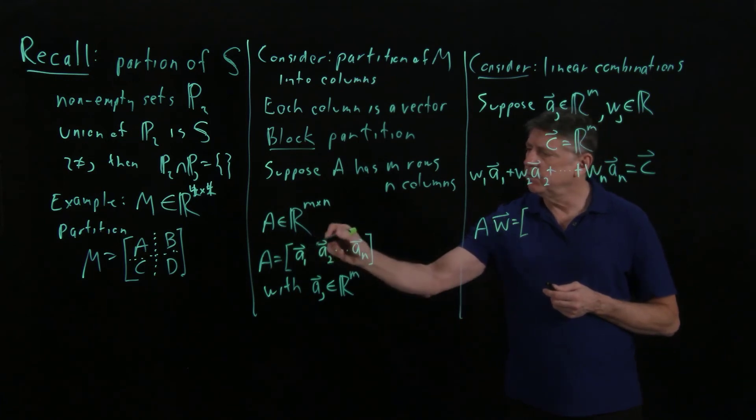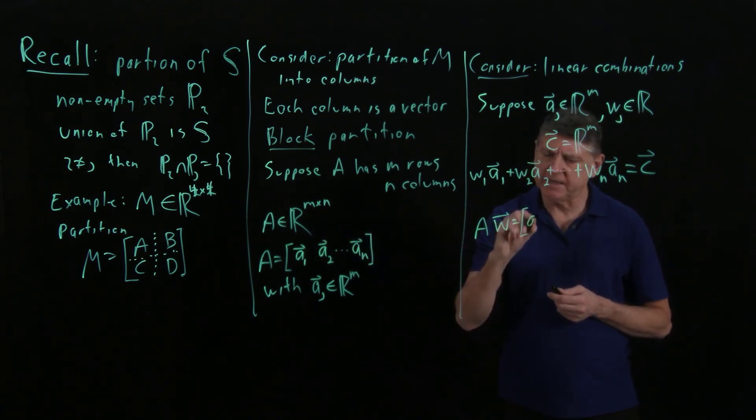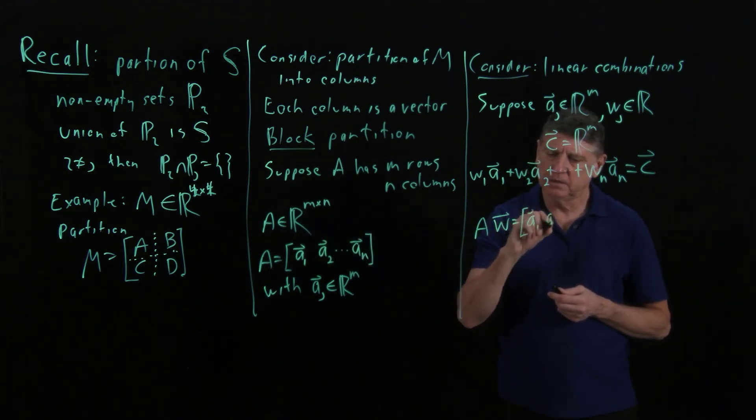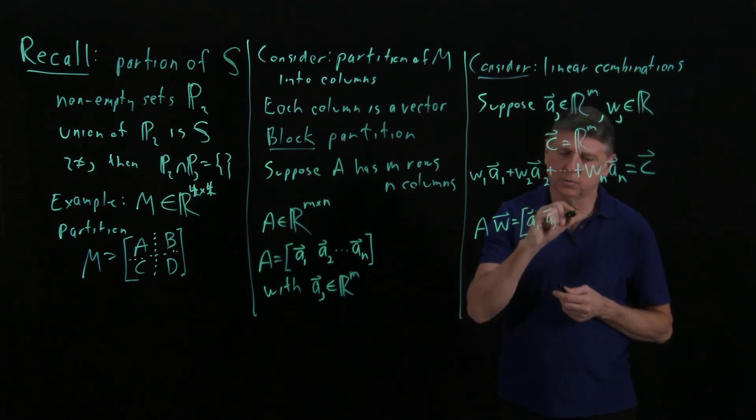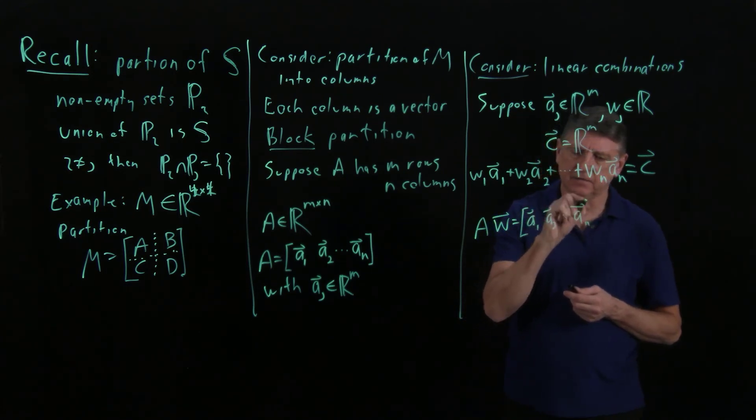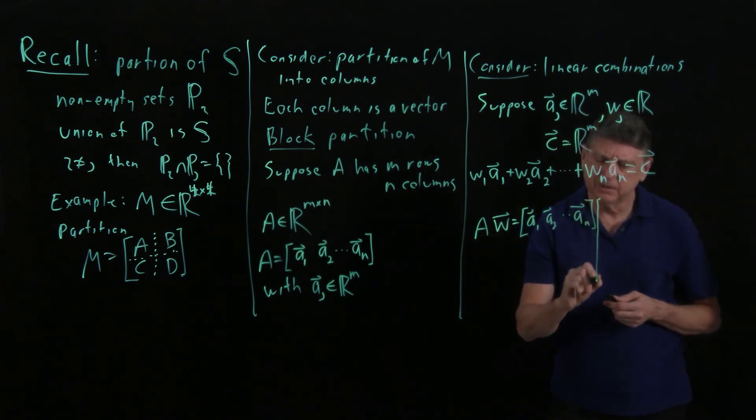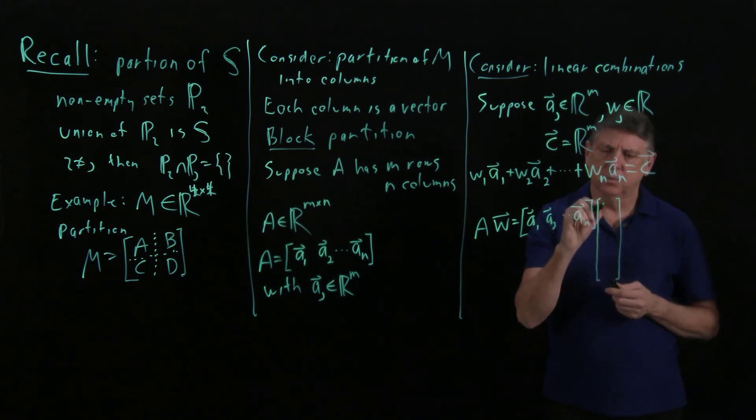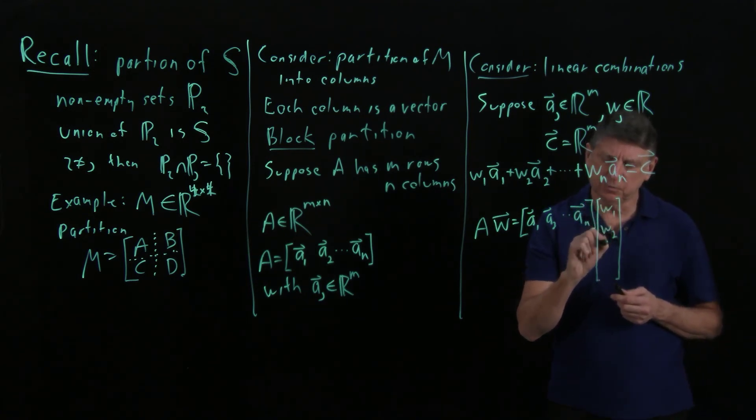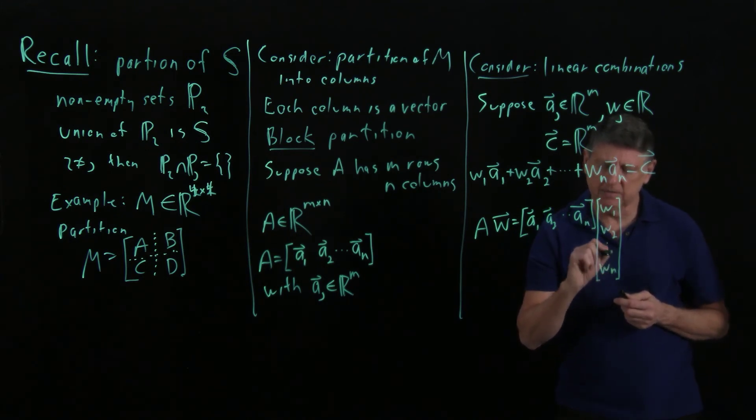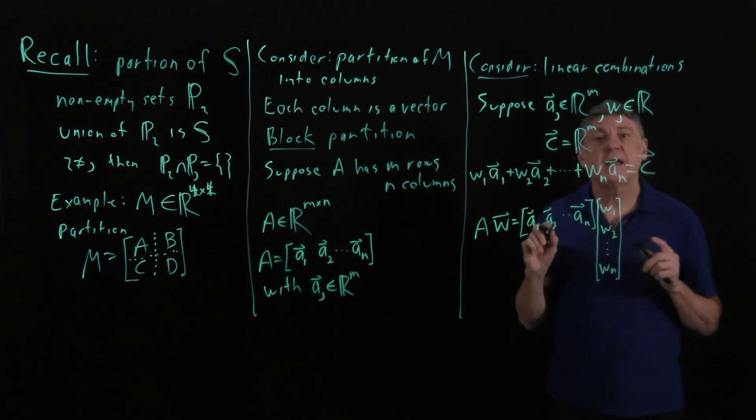Well, A, we know that we can block partition that as a1, a2, and so on, until we get to an. And now what happens when we've gathered w into a vector? Well, this would have w1, w2, and so on, to wn.